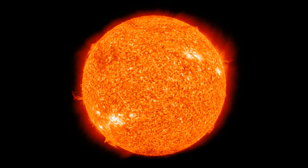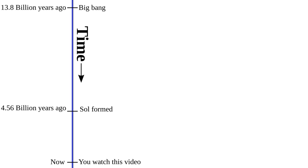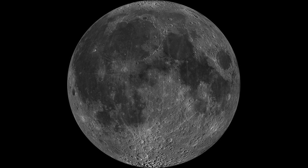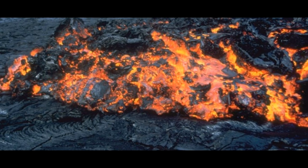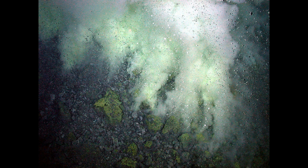Our solar system coalesced about 4.56 billion years ago, and planet Earth a short 50 million years later. Our moon is estimated to have accreted about 10 million years after that. Initially, the Earth was a hot and inhospitable planet. But its surface cooled and formed a crust, which buffered its surface from the heat beneath and allowed oceans of liquid water to pool on its surface.